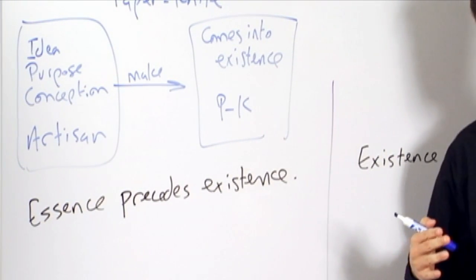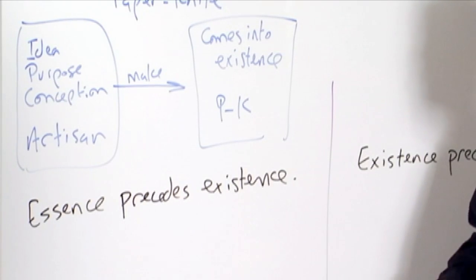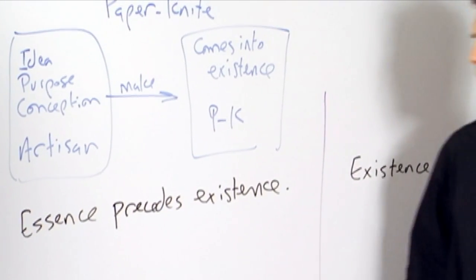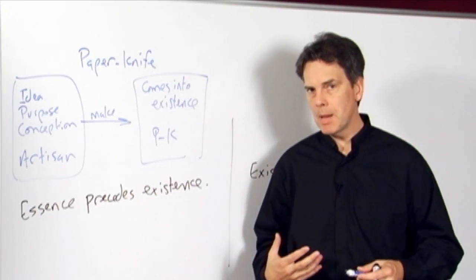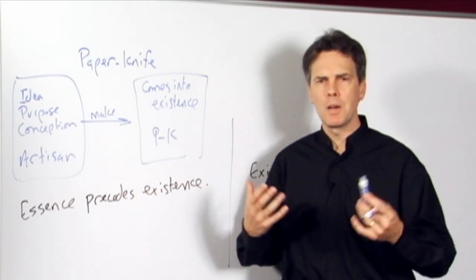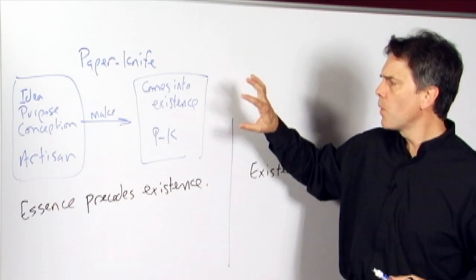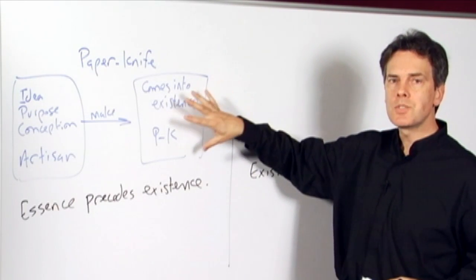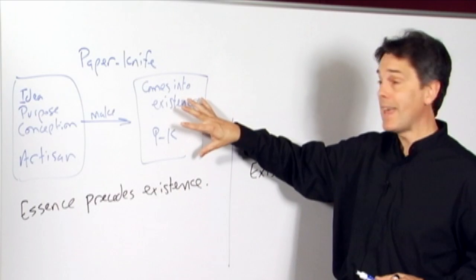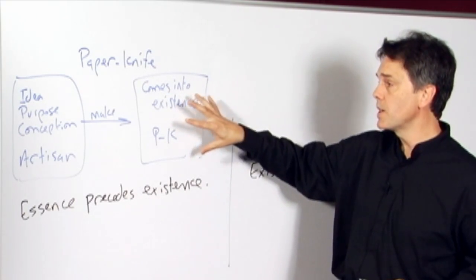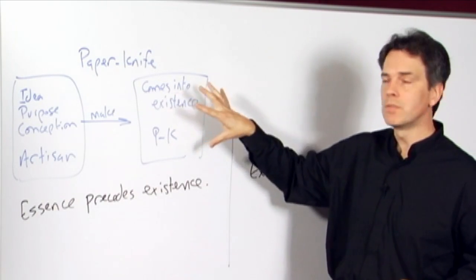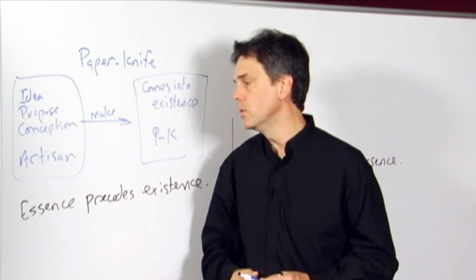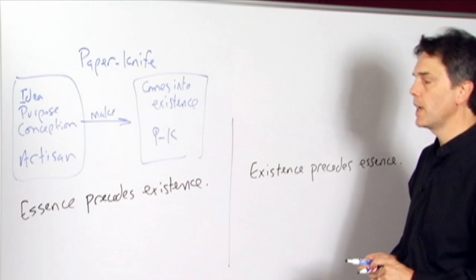So again, if we anthropomorphize and we put ourselves in the perspective of the paper knife and said, okay, why do I exist? What is the meaning of my existence as a paper knife? What is my purpose? Why am I here? Why was I created, and so forth? Well, the paper knife has a ready-made answer to that kind of question. It doesn't really need to anguish over the right answer to those questions because it came into existence for a purpose. And the meaning of its existence is to fulfill that purpose by the artisan who designed and created it.